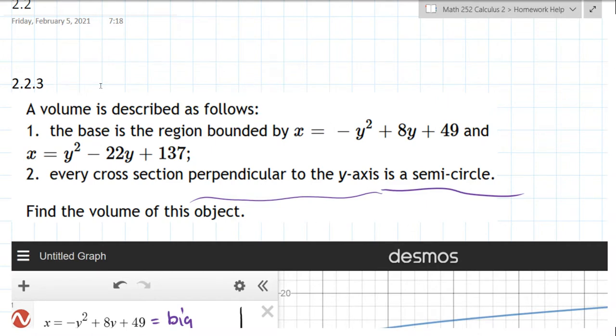So we have a base of a region bounded by these two curves here. Now they're both quadratics and neither of which is terribly simple. The coefficients are pretty big.